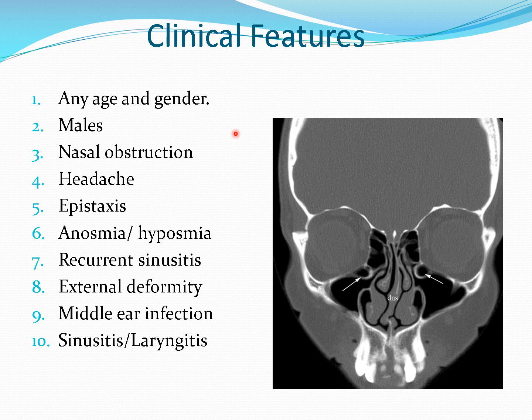DNS is more common in males. The most common symptom is nasal obstruction, which can be unilateral in cases of C-shaped deflection and bilateral in cases of S-shaped deflection. There may be permanent nasal obstruction on one side and intermittent nasal obstruction on the other side due to compensatory hypertrophy of the inferior turbinate. In C-shaped deflection there is a wide patent nasal cavity on one side, leading to hypertrophy of that inferior turbinate.